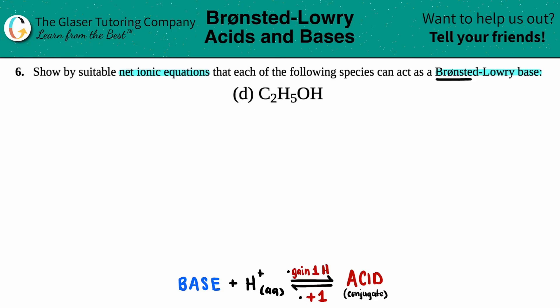Background story: Brønsted and Lowry were the names of two scientists that came up with this idea of what acids and bases do in aqueous solutions - in water. What they found out was that bases accept hydronium ions, which is H+, and they accept the hydronium ions from the acids.